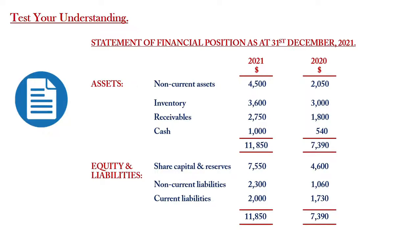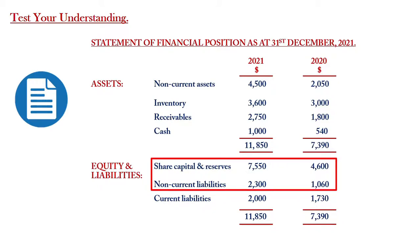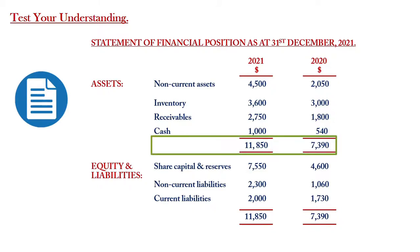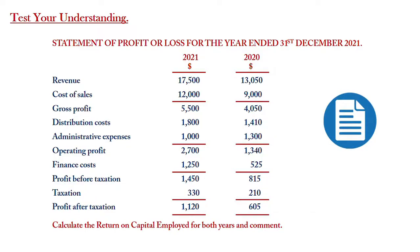Let's look at a worked example. We have an extract of a business's statement of financial position as at 31st December 2021. The asset column shows non-current assets, inventory, receivables, and cash for both years, giving total assets of 11,850 for 2021 and 7,390 for 2020. The equity and liability column shows share capital and reserves, non-current liabilities, and current liabilities — totaling 11,850 for 2021 and 7,390 for 2020. We will focus on share capital and reserves plus non-current liabilities, or alternatively total assets less current liabilities, to arrive at capital employed.